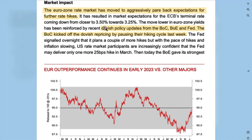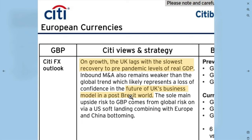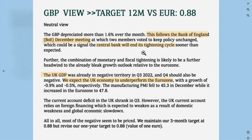The fundamental analysis discusses dovish monetary policy updates from the Bank of Canada, Bank of England, and the Fed — with the Bank of Canada kicking off the dovish repricing by pausing their hiking cycle. Citibank, for example, talks about GDP: the UK lagging with the slowest recovery to pre-pandemic levels, and the effects of Brexit on GDP. Another bank talks about why their target for the pound versus the euro over the next 12 months would be around 0.88.